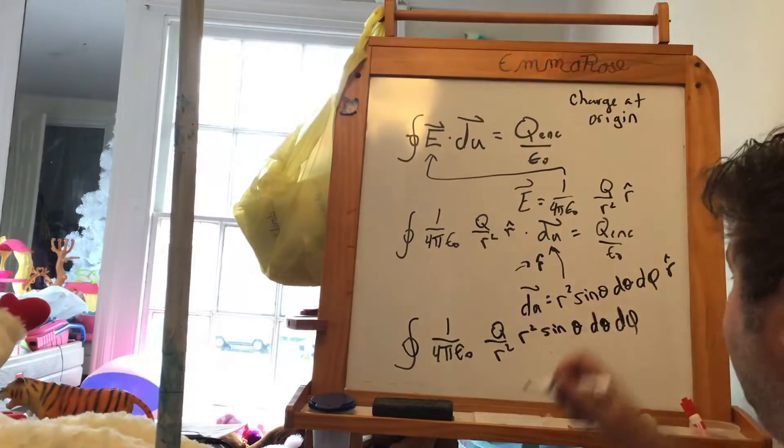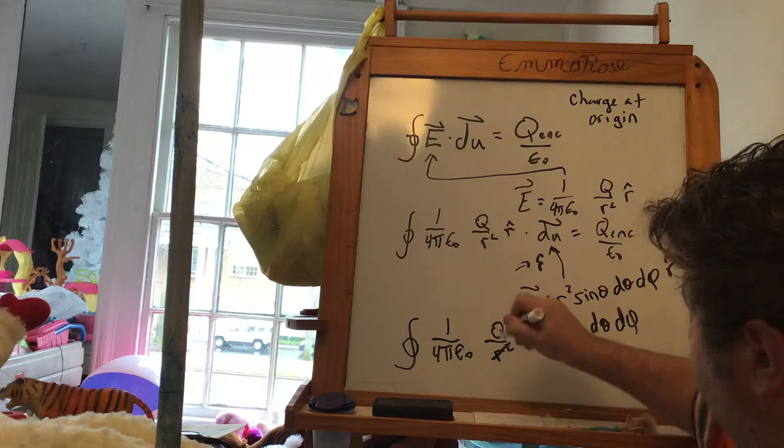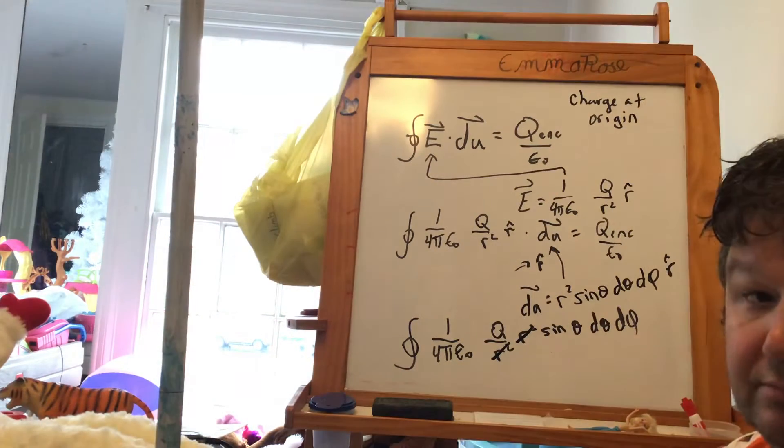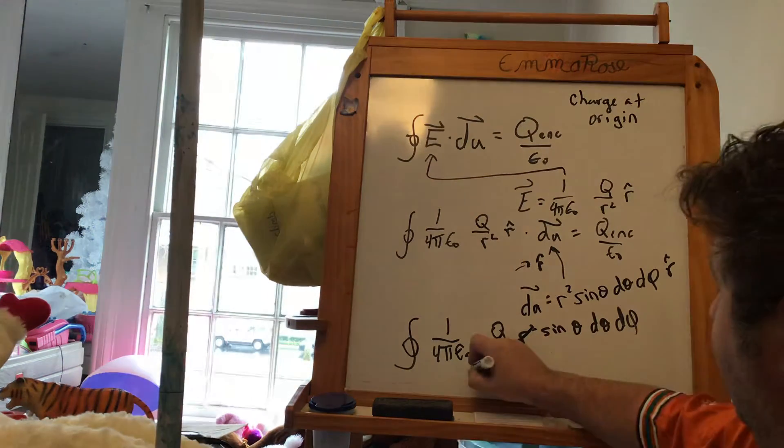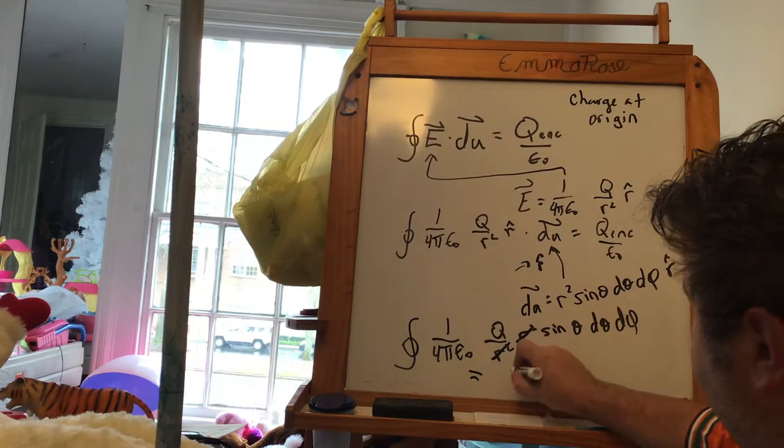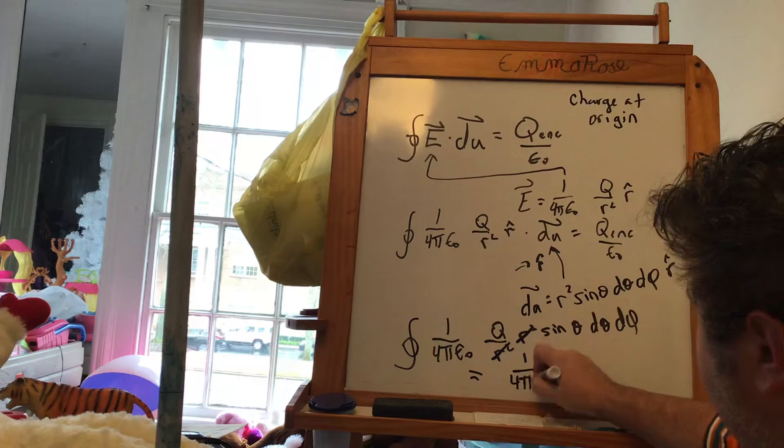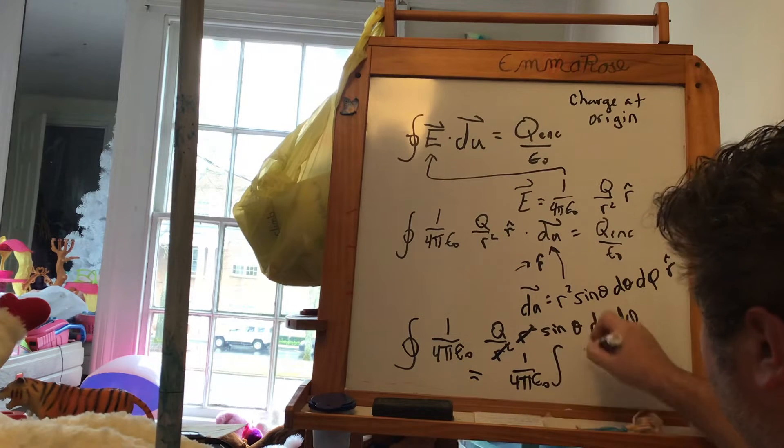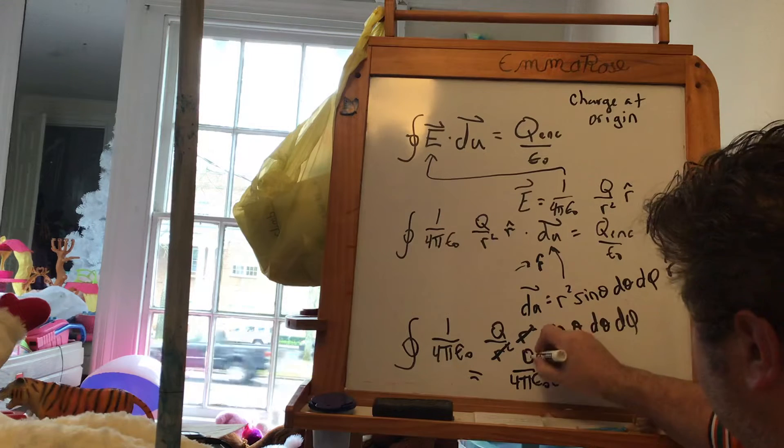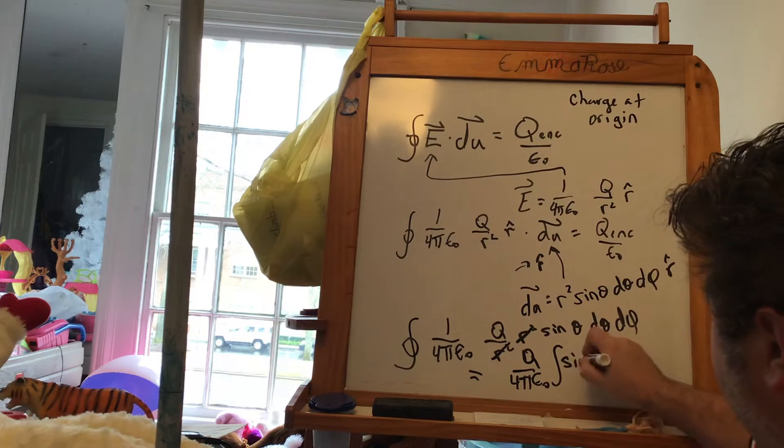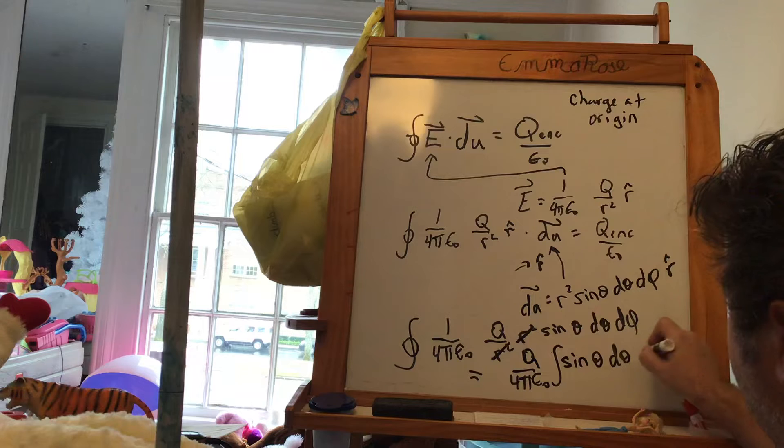An interesting thing happens here. The r squareds cancel out. And I'm left with 1 over 4π epsilon nought, the integral, there's a q at the top, q sine theta d theta d phi.